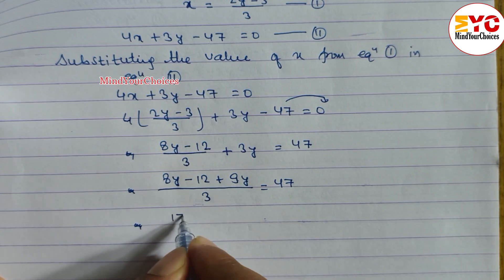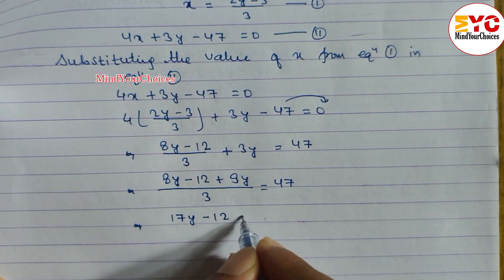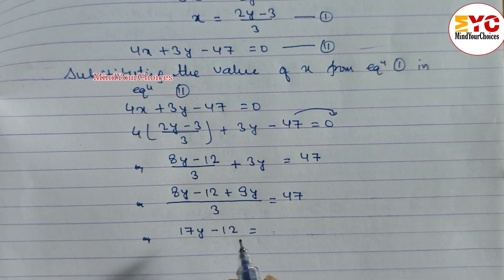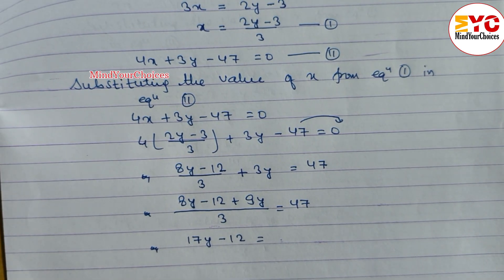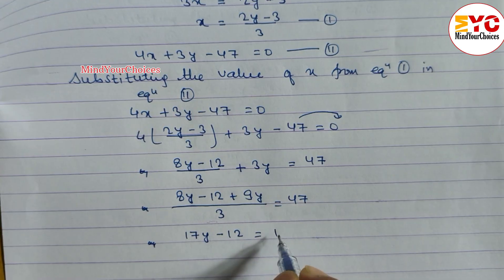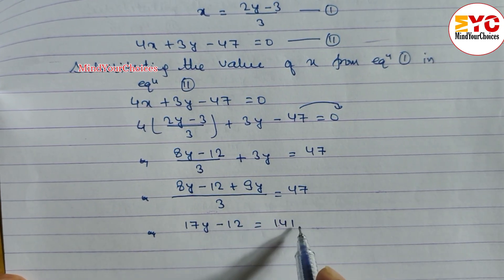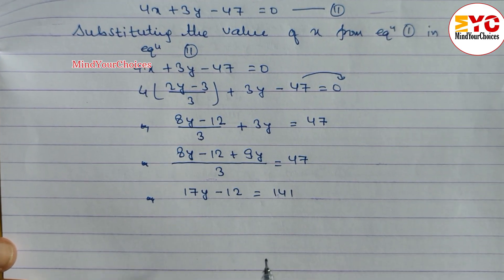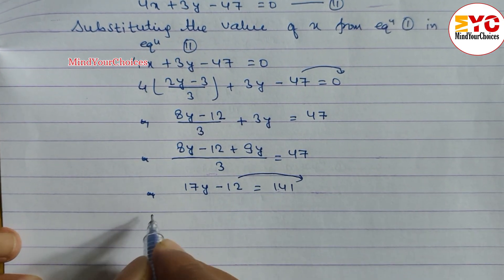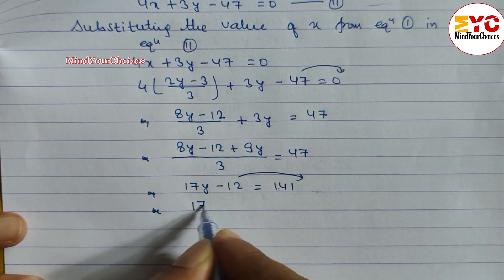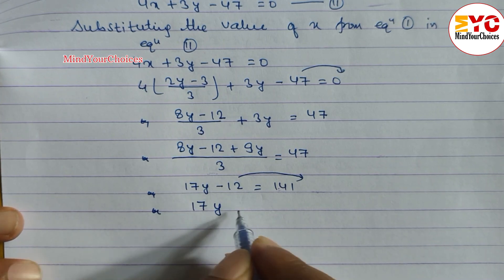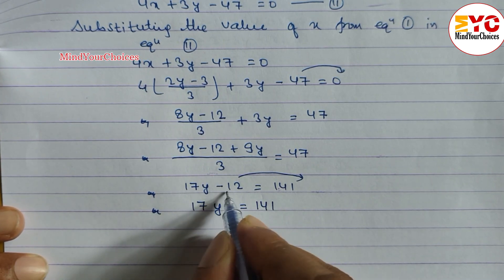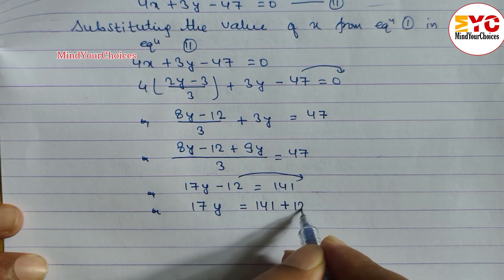We can write here: 17y minus 12 is equal to 47 multiplied by 3. Let's multiply: 47 into 3 gives us 141. So we can write: 17y minus 12 is equal to 141. Now we move minus 12 to the right side, so the sign changes to plus 12.